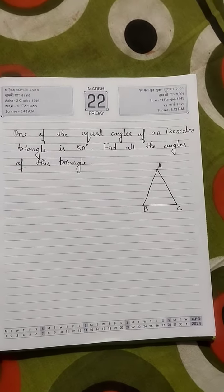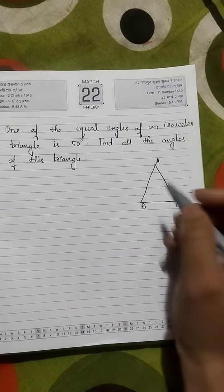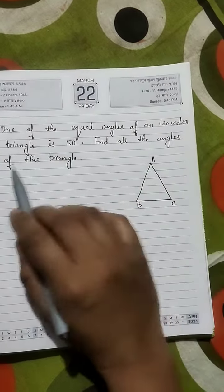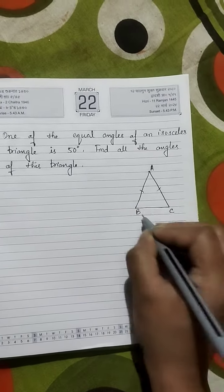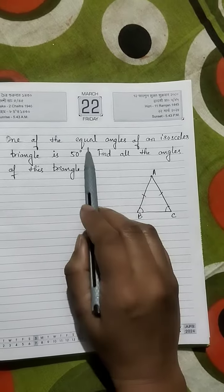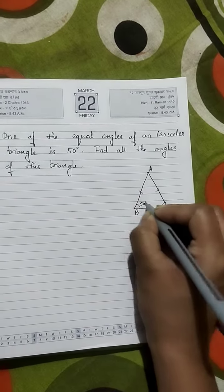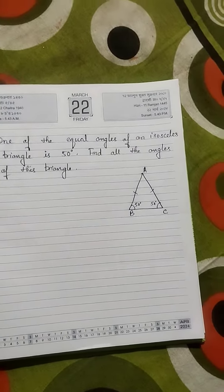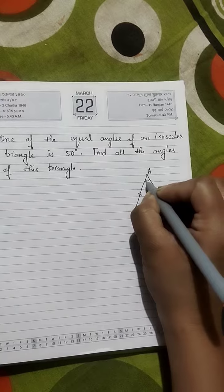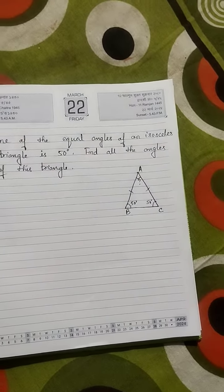So students, this is triangle ABC. It's an isosceles triangle. Isosceles triangle means two sides are equal and two angles are equal. The equal angles of an isosceles triangle are 50 degrees, so these two are 50 degrees each. This is the unequal angle, so we have to find this angle.